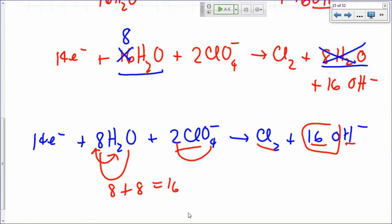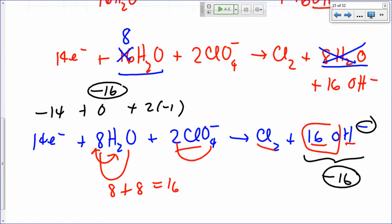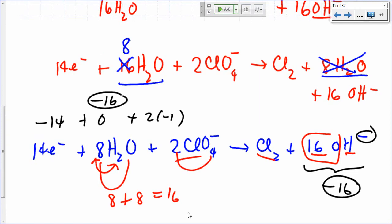As far as charges go, this is negative 14 plus 0 plus 2 times negative 1. That's a total charge of negative 16 on the left. And the total charge on the right is also negative 16. 16 times negative 1. You have 16 of those hydroxides. It's negative 16. So that's your balance half-reaction.